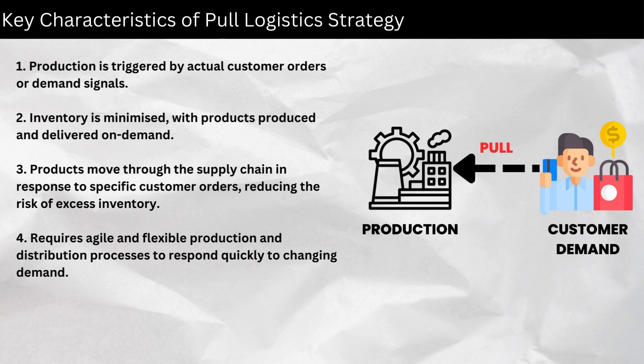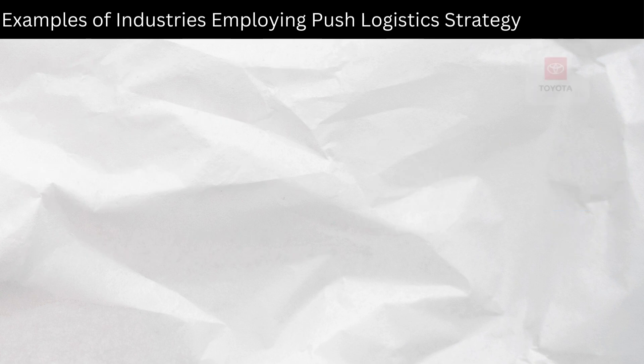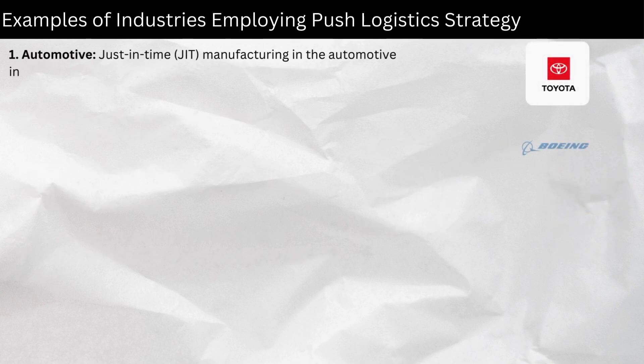Four, requires agile and flexible production and distribution processes to respond quickly to changing demand. Examples of industries employing pull logistic strategy.